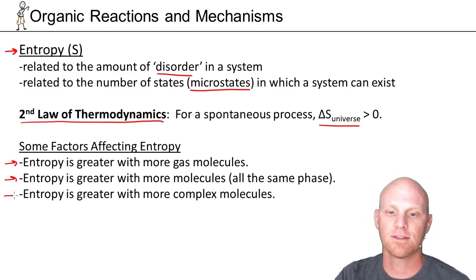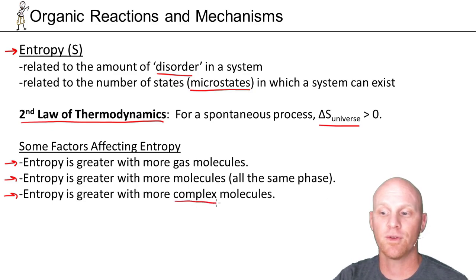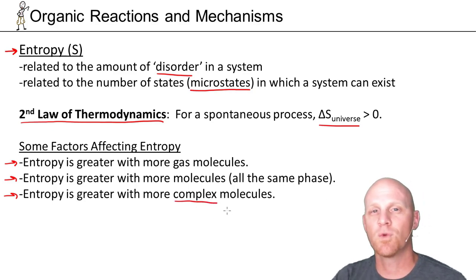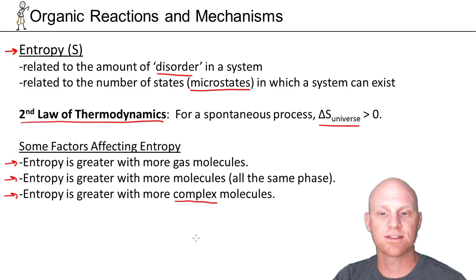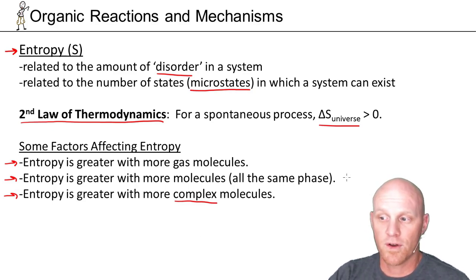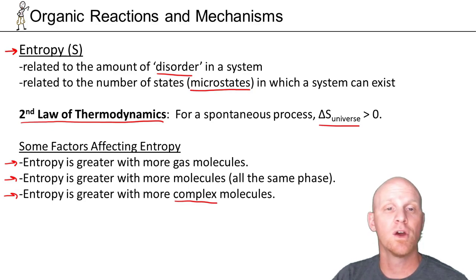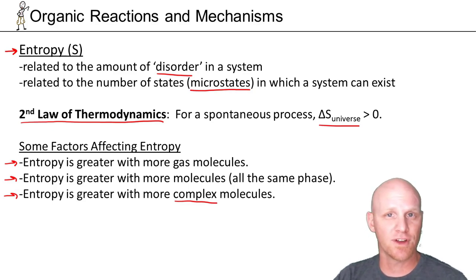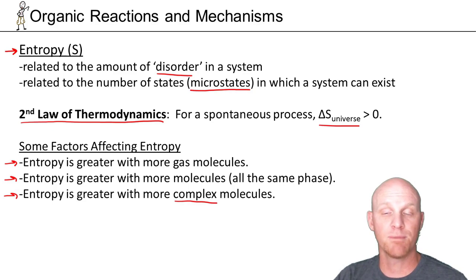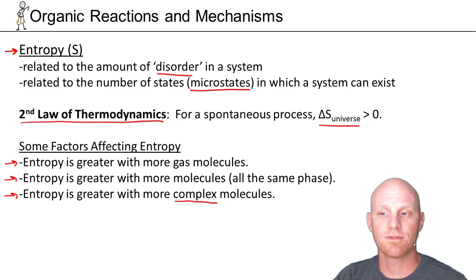Finally, entropy is greater with more complex molecules — an increase in complexity, meaning more atoms, more types of atoms — that leads to greater entropy. The most important factor is the number of molecules: assuming all reactants and products are in the same phase, whichever side has more molecules has greater entropy. If two molecules turn into one, that gives a negative delta S; if one molecule turns into two, that gives a positive delta S. That's probably the most common factor we'll see in organic chemistry.